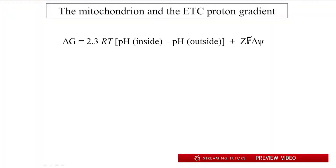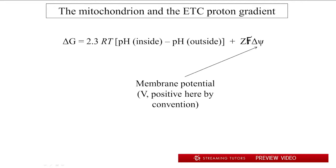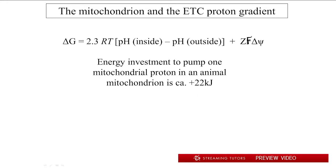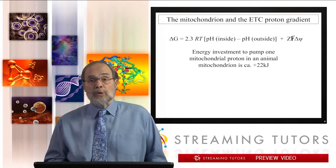Here's the basic thermodynamics. You can calculate the Gibbs free energy using the gas constant, standard temperature, and a couple of other constants. Z is the charge and number of ions — in this case plus one, because we're talking about protons. F stands for the Faraday constant. Delta psi is the membrane potential, which by convention is voltage with a positive sign in this context. For most courses, you won't need to memorize this expression, but you may be asked to use it for quantitative problems. The energy required to pump one mole of mitochondrial protons in an animal is about 22 kilojoules per mole.